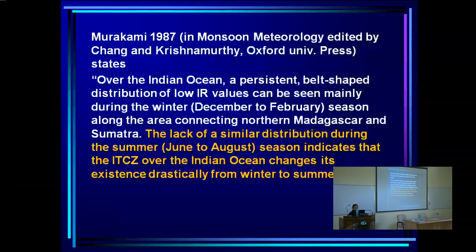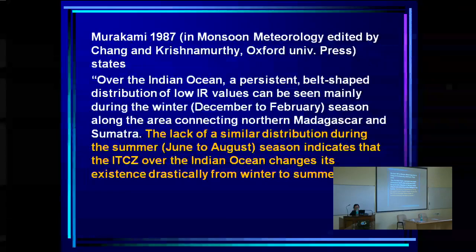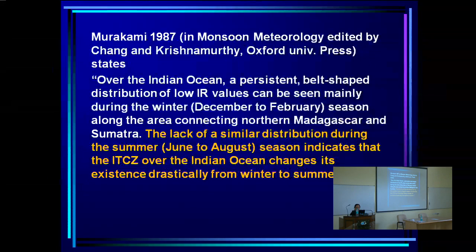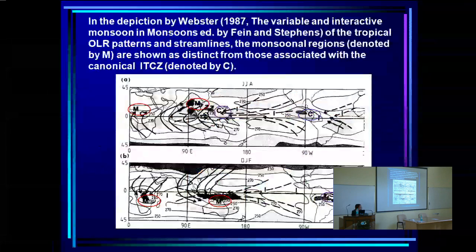Murakami noted that over the Indian Ocean a persistent bell-shaped distribution of low IR values can be seen mainly during winter, along the area connecting north Madagascar and Sumatra. The lack of a similar distribution during summer indicates that the ITCZ over the Indian Ocean changes its existence drastically from winter to summer. People were not willing to believe that the ITCZ migrates and comes over us in the summer.